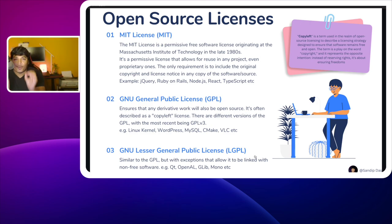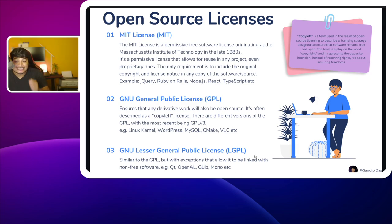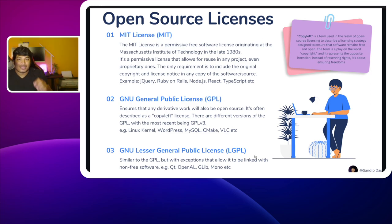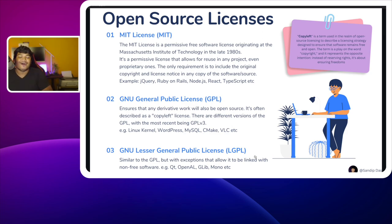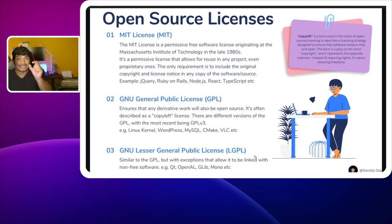There are eight most popular open source licenses. Let's explore them one by one. The first is the MIT License — a permissive free software license originating at the Massachusetts Institute of Technology in the late 1980s. It allows use in any project, even proprietary ones, meaning you can use open source code with this license in a commercial project without any problem. The only requirement is to include the original copyright and license notice in any copy of the software. Popular examples include jQuery, Ruby on Rails, Node.js, React, and TypeScript.